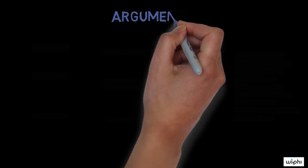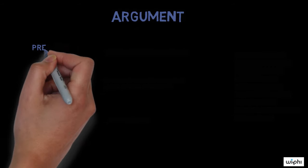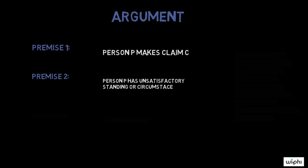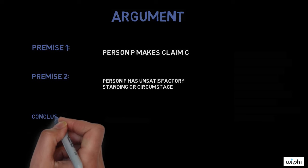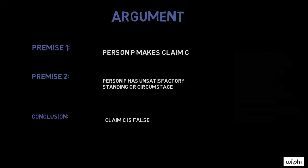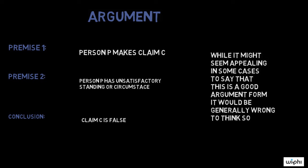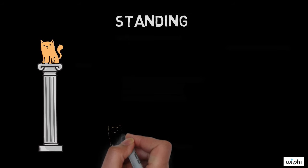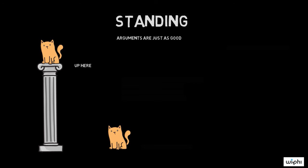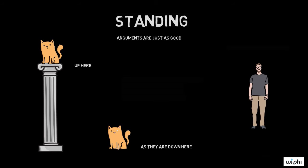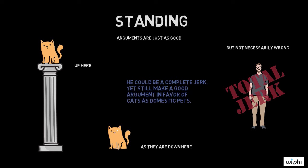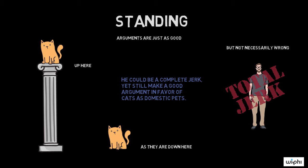Let's represent the argument more generally to see why this reasoning is actually flawed. Premise one: person P makes claim C — 'cats rule, dogs drool.' Premise two: person P has unsatisfactory standing or circumstance — Vlad is a total jerk. Conclusion: therefore claim C is false — it's false that cats are better domestic pets. The standing of the person making the argument in most cases will be irrelevant to the validity or soundness of the argument. Simply because Vlad is a total jerk doesn't mean that his claim about cats as better domestic pets is false. He could be a complete jerk yet still make a good argument in favor of cats as domestic pets.